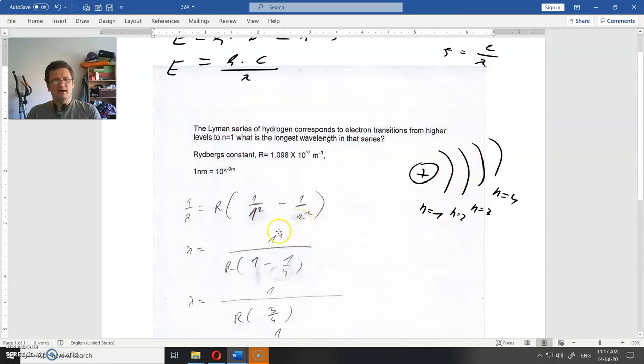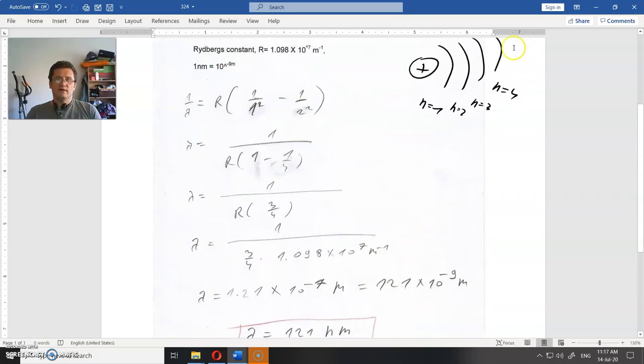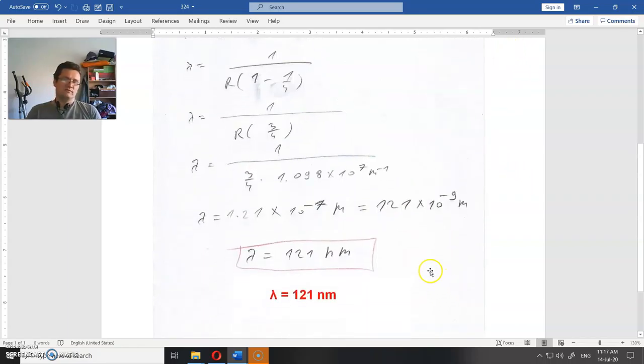Here would be number 3, and here would be number 1, and then you could see that that wavelength will be smaller than this, and this wavelength will be smaller than that, and so on. So you could test that.